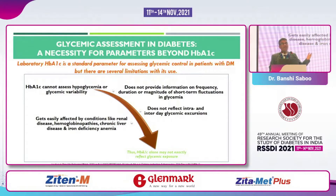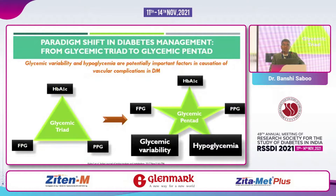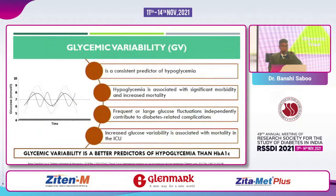Just like 20 years ago we changed clinical practice from doing multiple glucose monitoring to the average glucose which is A1c, there is now a paradigm shift in diabetes management from glycemic triad to glycemic pentad. Before, it was fasting plasma glucose, post-meal glucose level, and A1c — the typical glycemic triad. Now we move to the glycemic pentad which additionally includes glycemic variability and hypoglycemia.